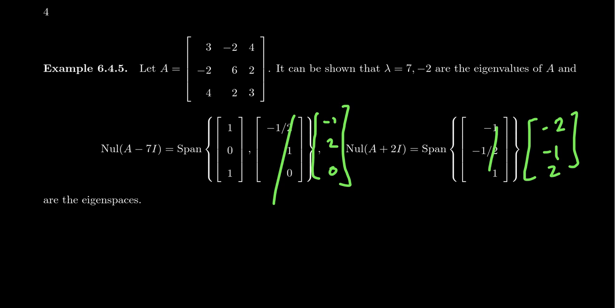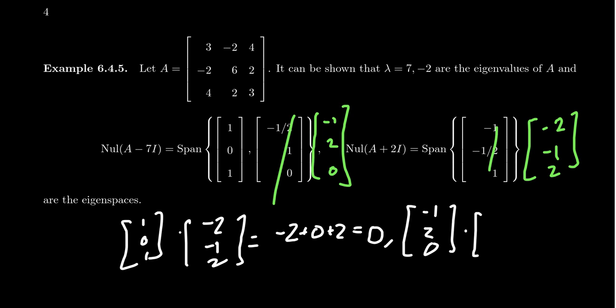And one should check that these vectors are in fact orthogonal with each other. If you take 1, 0, 1 and you dot it with negative 2, negative 1, and 2, notice you end up with negative 2 plus 0 plus 2, which is 0. So that one's orthogonal. Likewise, if you take negative 1, 2, 0 and you dot it with negative 2, negative 1, 2, you end up with 2 minus 2, which equals 0.